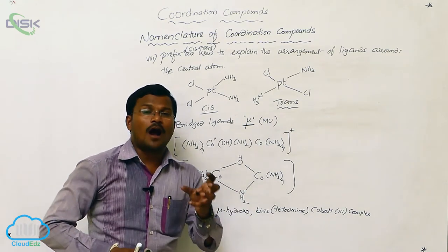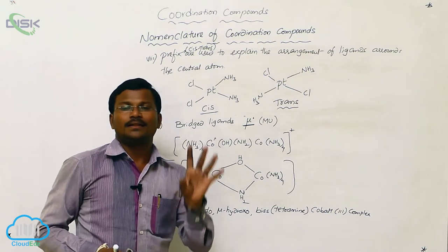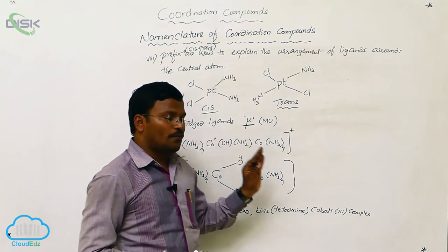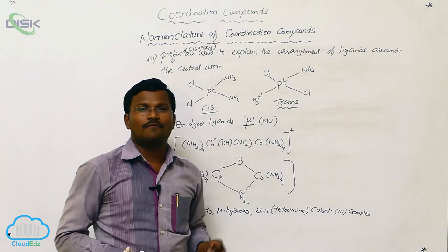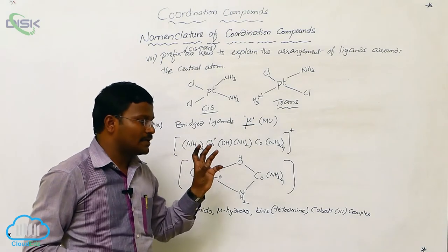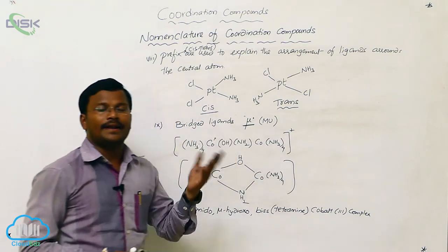Similarly, if complex ligands are present inside of the coordination sphere, then we have to use, for two complex ligands, bis, for three, tris, for four, tetrakis, like this.